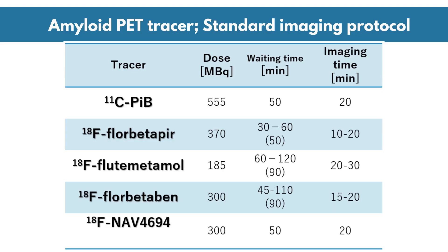Five PET tracers are currently available: carbon-11 PIB, fluorine-18 florbetapir, fluorine-18 flutemetamol, fluorine-18 florbetaben, and fluorine-18 NAV4694. Dose, waiting time, and imaging time are recommended for each tracer. Waiting and imaging times vary from tracer to tracer, ranging from 30 to 120 minutes and 10 to 30 minutes respectively.